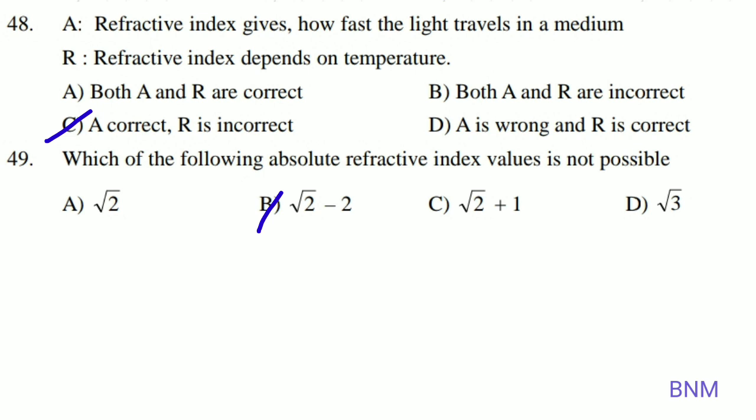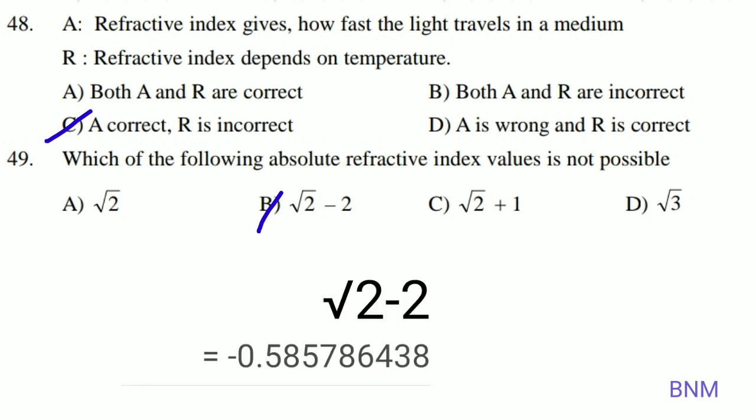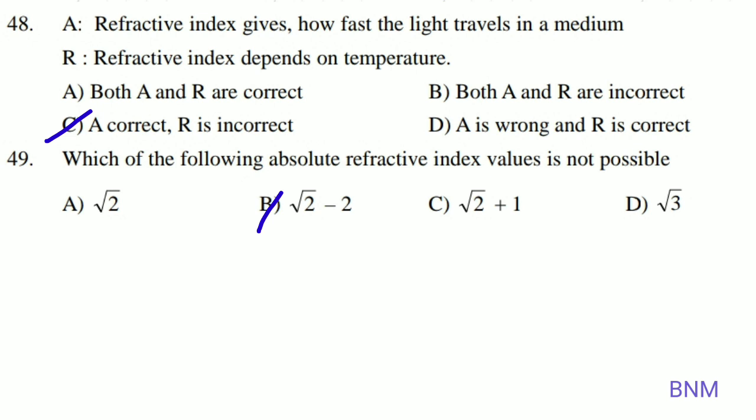Which of the following absolute refractive index values is not possible? The refractive index cannot be a negative value, so B is not possible and is the right answer.